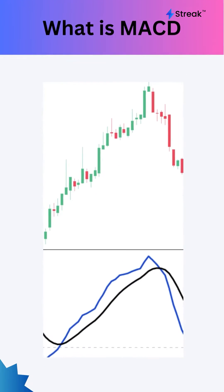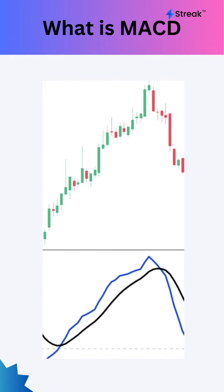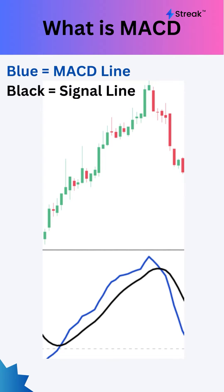The MACD indicator measures the price momentum. It consists of two lines, the MACD line and the signal line. The MACD indicator can help traders identify potential entry and exit points.